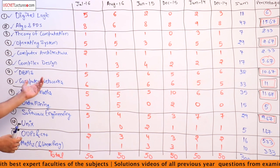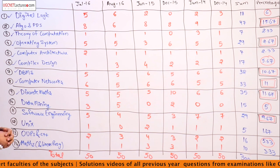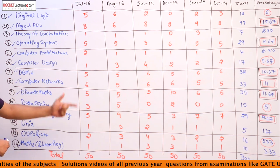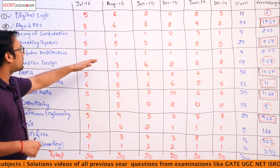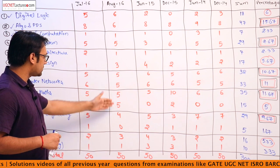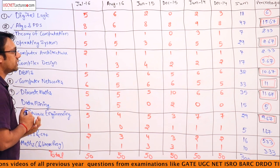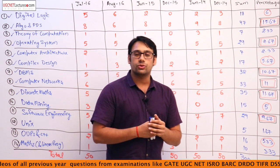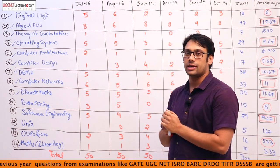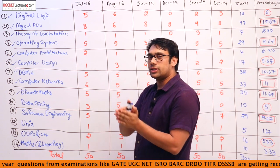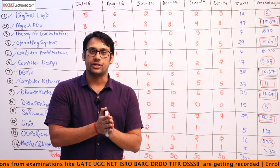For DBMS it is around 10.67%, rounding to 11%. For computer networks it is around 11%. For August 2016, this is the total data for each subject. From this you can make a simple analysis for Paper 2 of the UGC-NET examination. We will come back in the next video, which will be about Paper 3 analysis of these subjects.